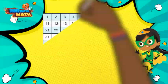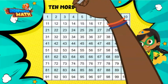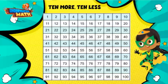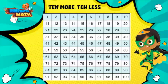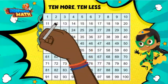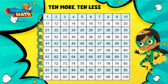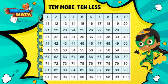Next up we have 10 more and 10 less. When we want to determine which numbers are 10 more or 10 less than another number, we can use a hundreds chart to help us. On the hundreds chart, as you move from one row to the next, you are counting by tens. This is helpful because we can see which numbers are 10 less by looking up one row, and 10 more by looking down one row.